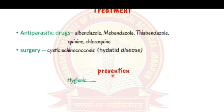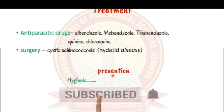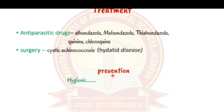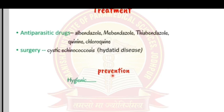Prevention focuses on maintaining hygienic conditions, since most parasites are transmitted via the fecal-oral route. Always wash hands before eating, avoid raw food — cook food thoroughly — and use RO or boiled water. The closing question for viewers: which helminth contains segments in its body?